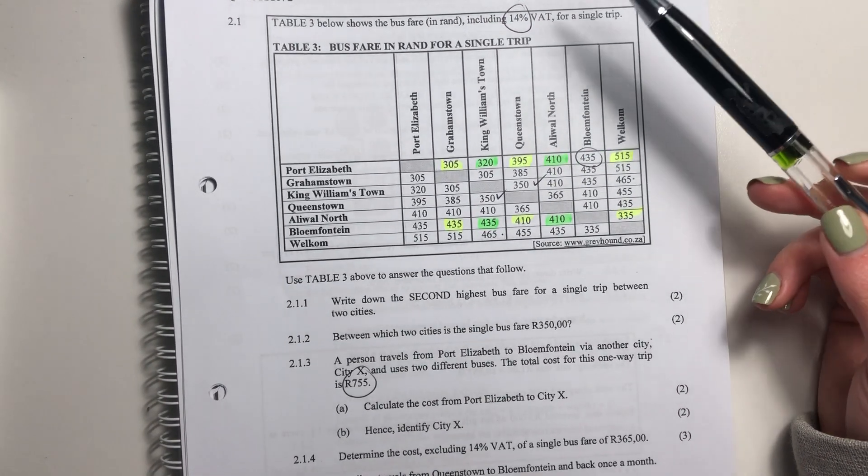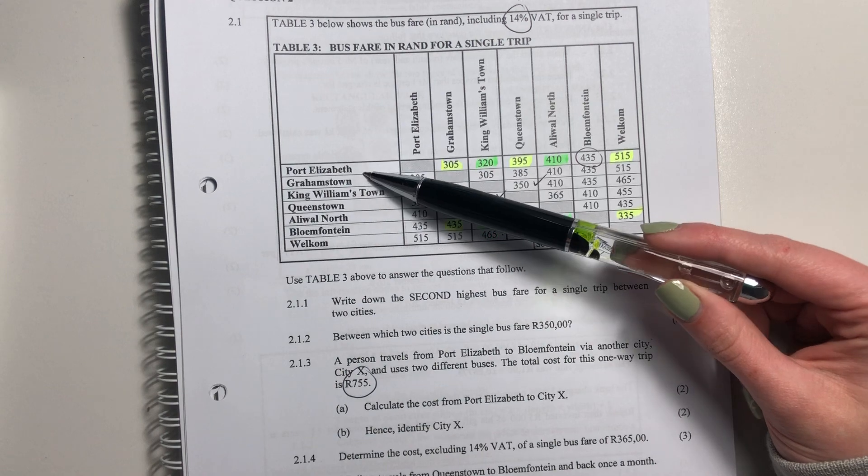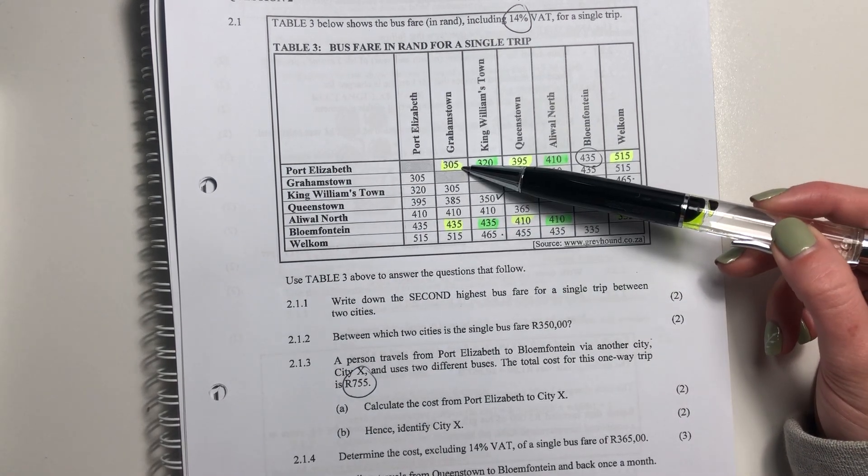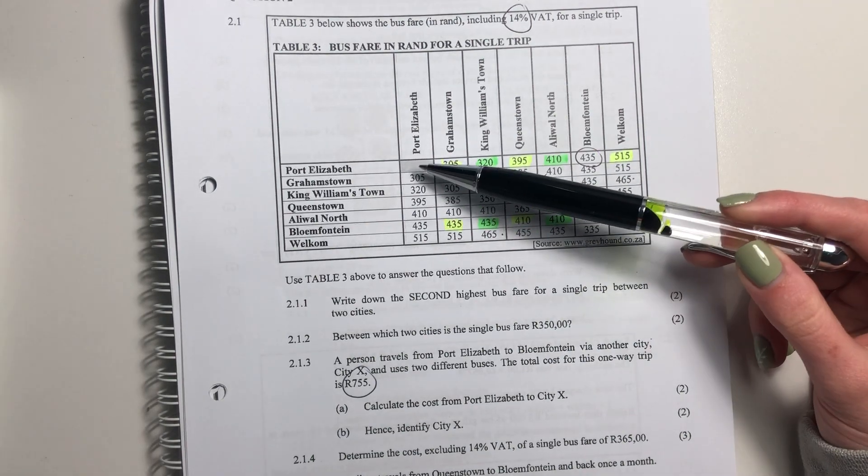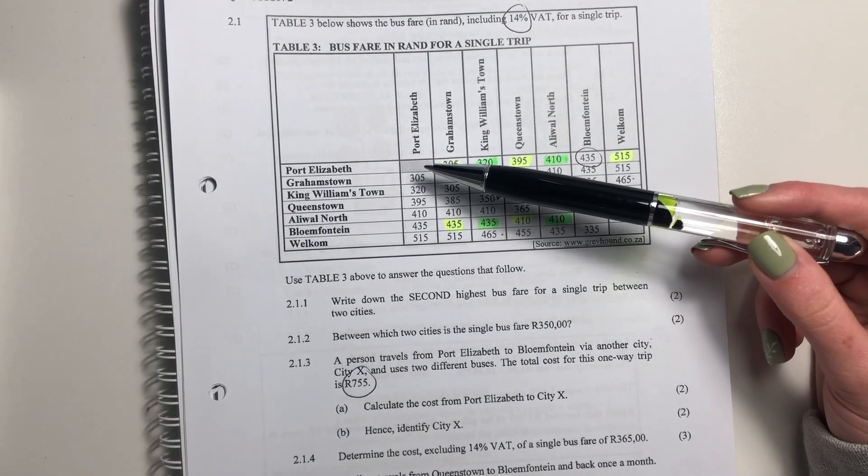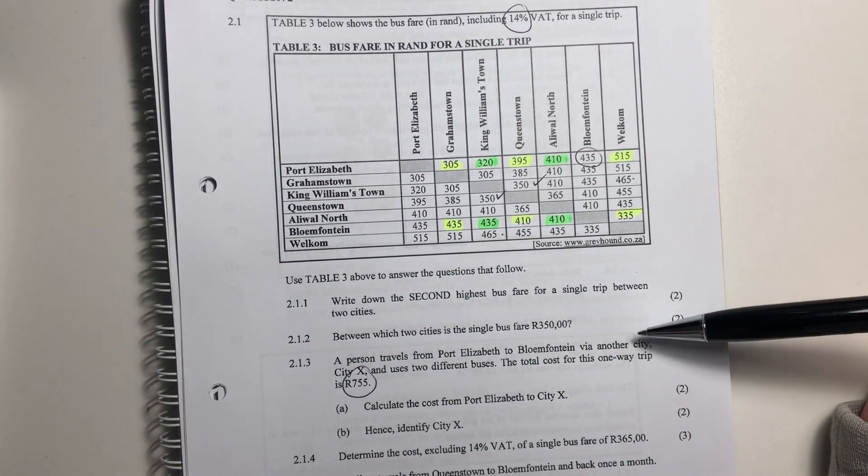So over here, how we read this is it's saying, well, PE to Grahamstown costs me 305 rand. Now, you could be saying, well, why is it all these blanks? Well, we don't go from PE to PE. We don't pay money to go where we are, right? So be careful about understanding this.